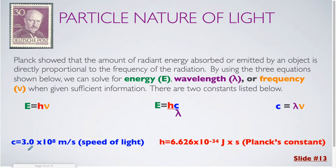Our constants are the speed of light, which is 3.0 times 10 to the eighth meters per second, and Planck's constant, which is 6.626 times 10 to the negative 34th joules times seconds. In each of these equations you'll have at least one constant: the first has Planck's constant, the second has Planck's constant and the speed of light, and the third has just the speed of light.